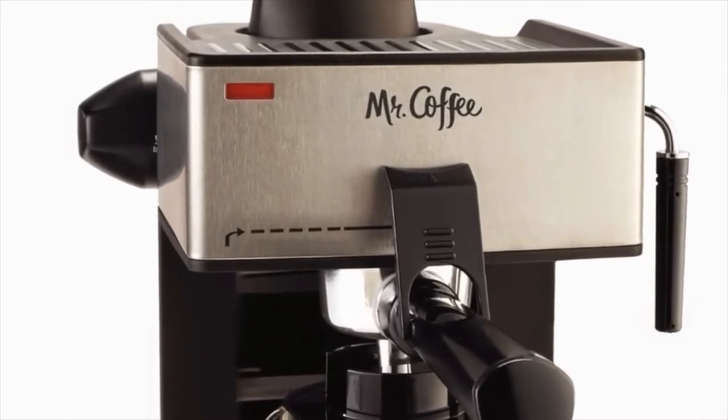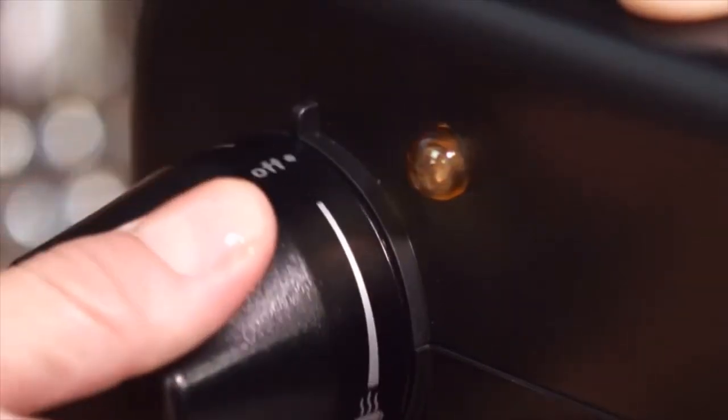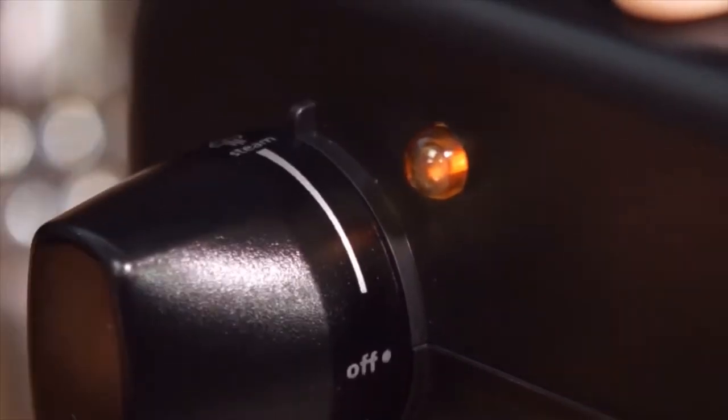Additionally, the ECM-160 Espresso Machine has a well-labeled control dial that is very easy to understand. So, using the machine will only take you a few minutes. It has 3 settings which include off, brew, and steam. It is that simple.